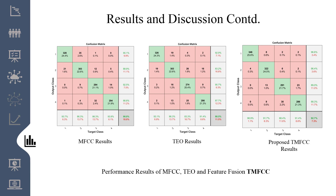These are the confusion matrices obtained for the three feature extraction techniques: MFCC at 90%, TEO at 88.5%, and the proposed TMFCC at 92.7%.